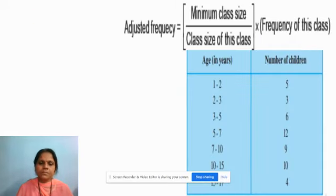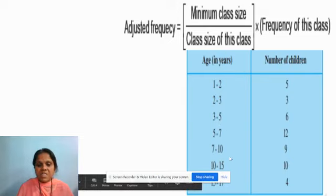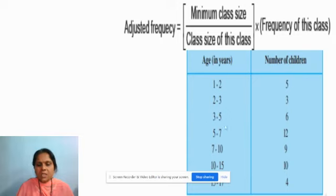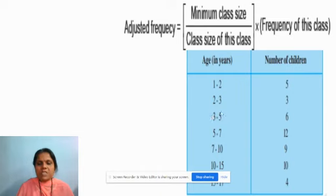Now let us study another example. Here the class intervals are continuous, but the width of the class is not the same: 2 minus 1 is 1, 5 minus 3 is 2, 10 minus 7 is 3 — the width varies. We also need to know what class mark is. Class mark is the average of the particular class, obtained by adding the lower limit plus upper limit divided by 2. For example, (10 + 15) / 2 = 7.5, and (15 + 20) / 2 = 17.5. The class mark changes from class to class, but the class width or class size should remain constant for a standard histogram.